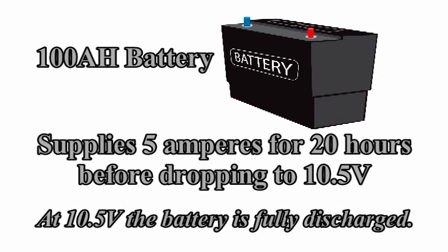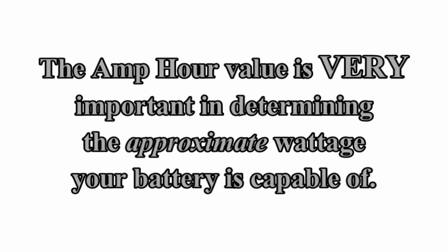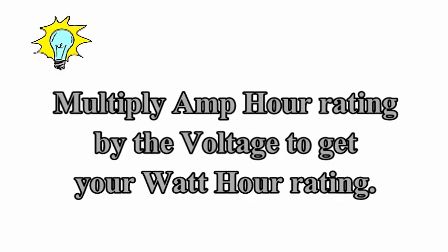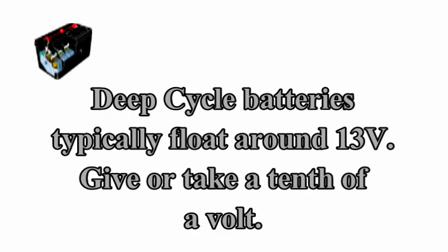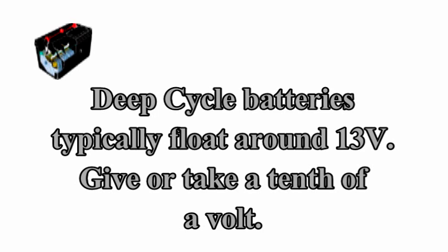At 10.5 volts the battery is fully discharged. This amp hour value is very important in determining the approximate wattage that your battery is capable of. If you simply multiply the amp hour rating by the voltage, you get your watt hour rating. There are a few ways to determine the voltage value to be used, but I like to use 13 volts as a reference. This is where a deep cycle battery generally rests. Here's an example. 105 amp hours by 13 volts is 1365 watt hours.